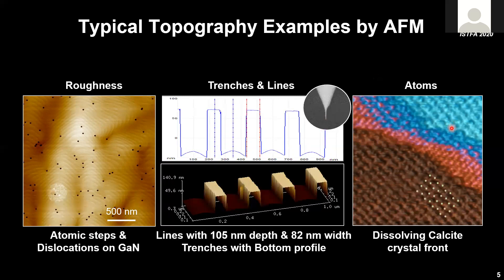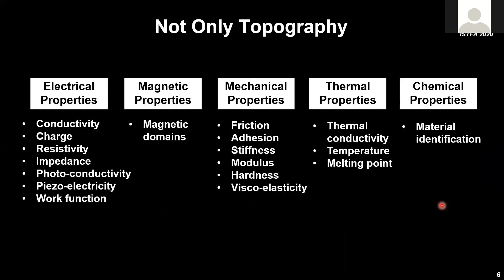The third example illustrates the resolution of the microscope going down to the atomic scale — an atomic lattice of calcite in solution while the calcite is actually dissolving. As mentioned, topography is only one leg of the AFM application side. The other leg is property measurements, and there are many different properties — this family keeps growing — that are measured by AFM.